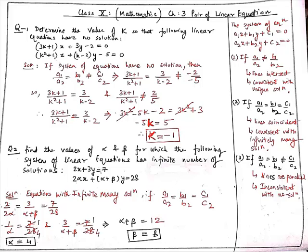Our next question is: find the values of alpha and beta for the following system of linear equations to have an infinite number of solutions. The equations are 2x + 3y = 7 and 2αx + (α + β)y = 28. Since the system has infinite solutions, the ratios must satisfy a1/a2 = b1/b2 = c1/c2. Comparing the ratios, we get 2/(2α) = 3/(α + β) = 7/28.